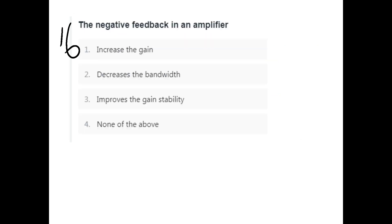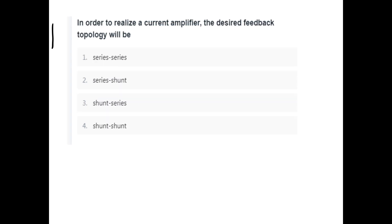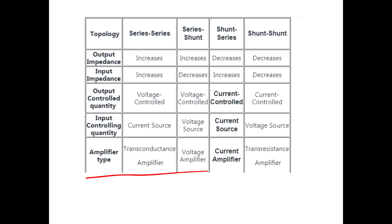Negative feedback in an amplifier will improve the gain stability. In order to realize a current amplifier, the desired feedback topology is shunt-series, option C. The output impedance increases in the series and shunt-series topology. Refer to the table in your notes for the feedback topology summary.